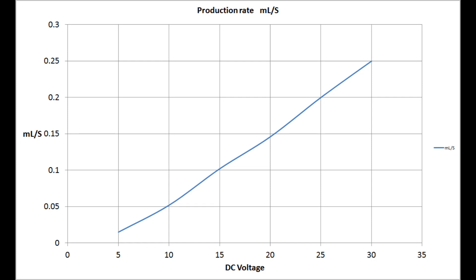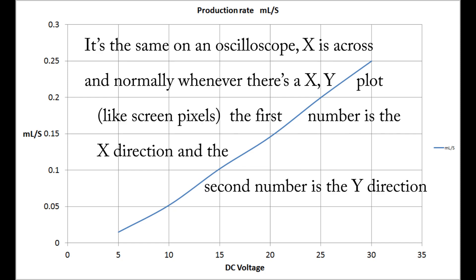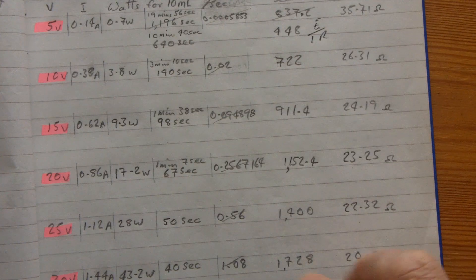If you can't remember which is the X and Y axis, just remember that an X is a cross — so it's across, and it goes across. On the Y axis on the right-hand side, I'm actually measuring the millilitres per second, and that's the data gathered in the tests shown in HH06.